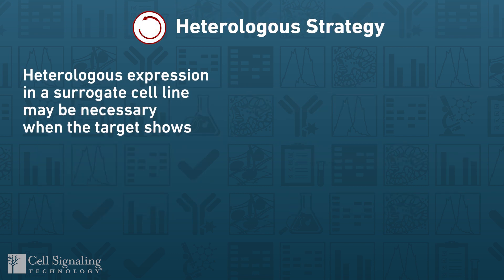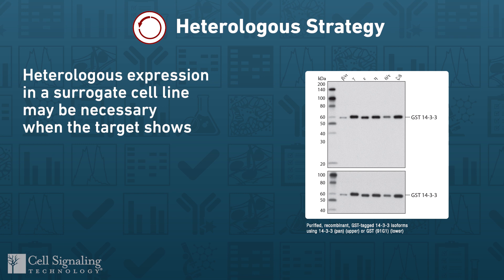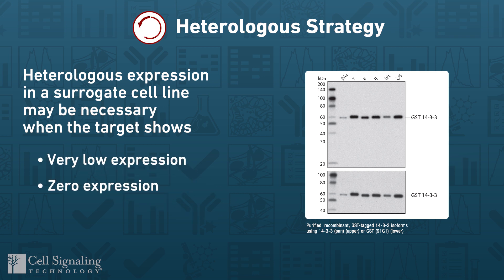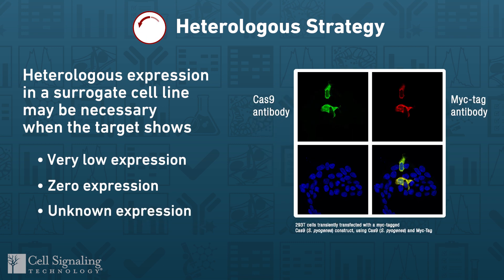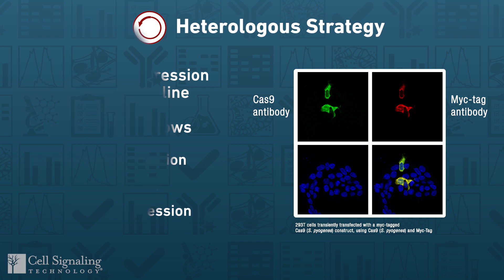In some cases, endogenous expression of the protein of interest in experimental models may be very low, undetectable, or unknown. We employ heterologous expression of the antigenic target, sometimes including recombinant engineering, to aid design of antibody validation experiments.